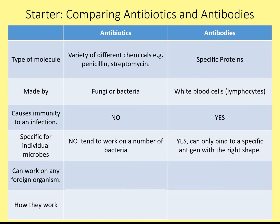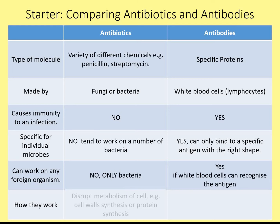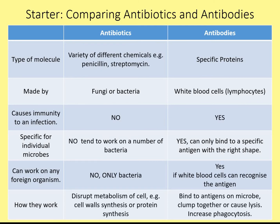Can they work on any foreign organism? Antibiotics will only really work on bacteria, whereas antibodies will work on anything that your lymphocytes can recognise as foreign — it could be a fungus, a virus, a bacterium, or even a protist like malaria. How do antibiotics work? They tend to disrupt the metabolism — the chemical reactions going on inside the cell — whereas antibodies bind specifically to antigens on the microbes, clump them together, cause them to burst, or increase the rate of phagocytosis by other white blood cells.